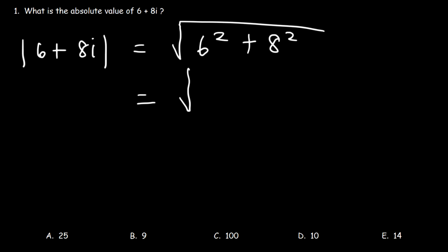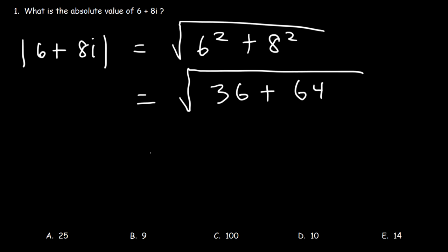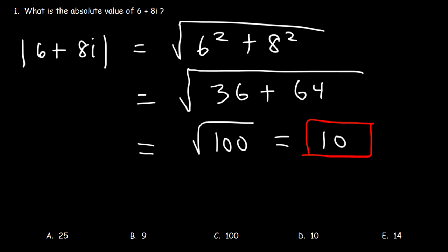6 times 6 is 36. 8 squared, which is 8 times 8, that's 64. 36 plus 64 is 100, and the square root of 100 is 10. So therefore, D is the right answer.